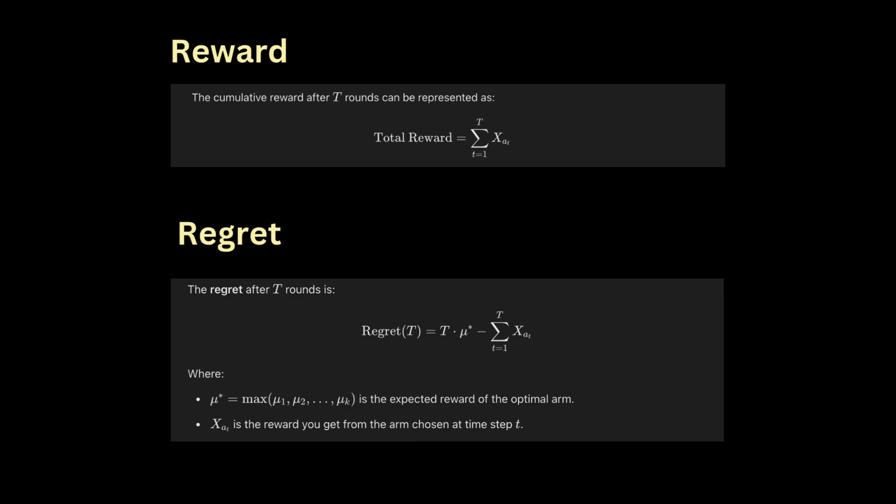A key concept in the multi-armed bandit problem is regret. This quantifies how much worse your strategy is compared to always pulling the arm with the highest expected reward, that is the optimal arm. The objective of any bandit algorithm is to minimize regret over time. Ideally, the regret grows slower than linearly with time T.